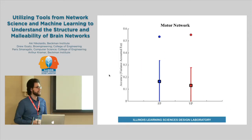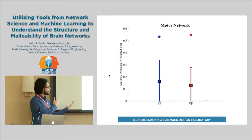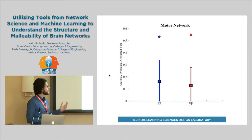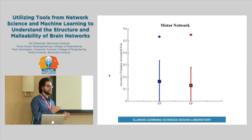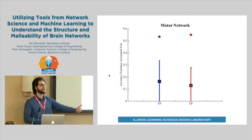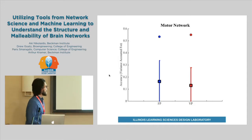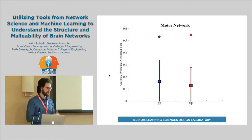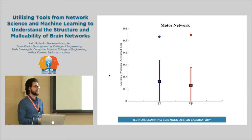We were also interested in whether we could look at pre-training differences in brain connectivity and predict how much people were going to be able to learn over time, based on how their brain was wired up before they even started training. We found that in the motor network — the part of the brain involved in motor learning and movement — we could predict over 50% of the variance in learning in this task.